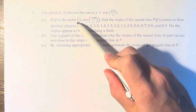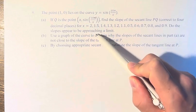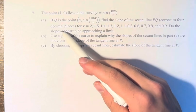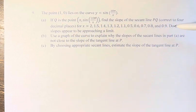We're asked if Q is the point (x, sin(10π/x)), find the slope of the secant line PQ correct to four decimal places for x equals all of these values. We're asked, do the slopes appear to be approaching a limit?